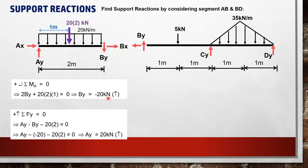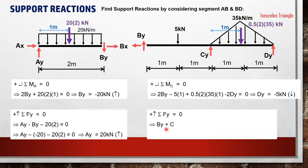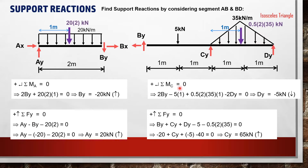We determine AY by summation of Fy equal to zero. In segment BD, we first determine the resultant of the triangular loading. Since this is an isosceles triangle, the resultant acts at the center of the loading. We can then solve for the remaining forces DY and CY.